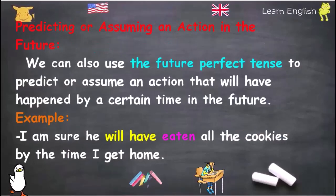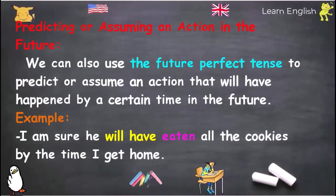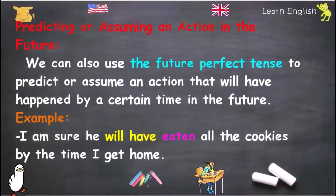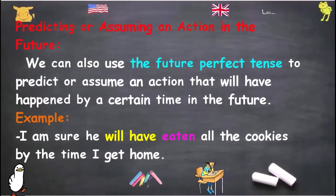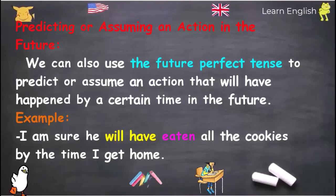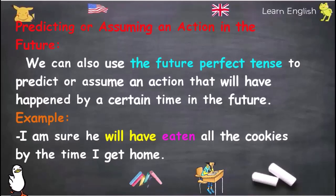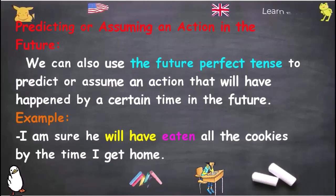Predicting or assuming an action in the future: We can also use the Future Perfect Tense to predict or assume an action that will have happened by a certain time in the future. Example: 'I am sure he will have eaten all the cookies by the time I get home.'